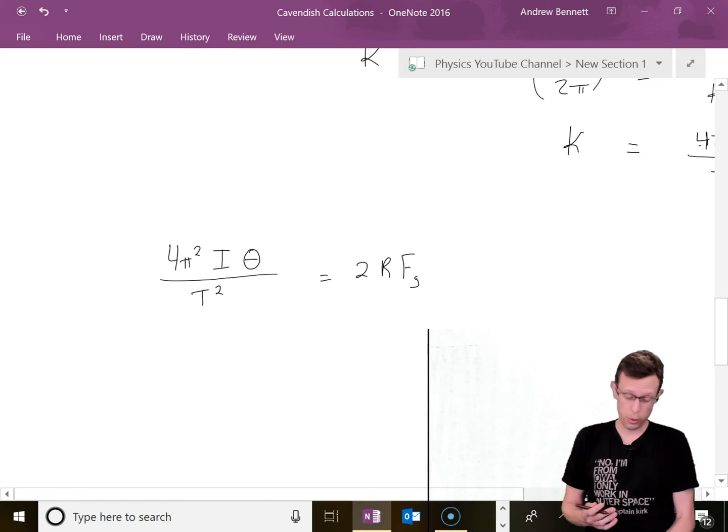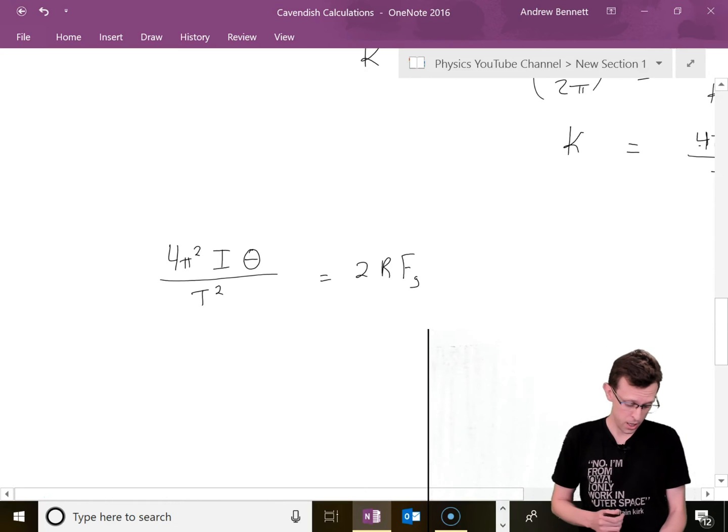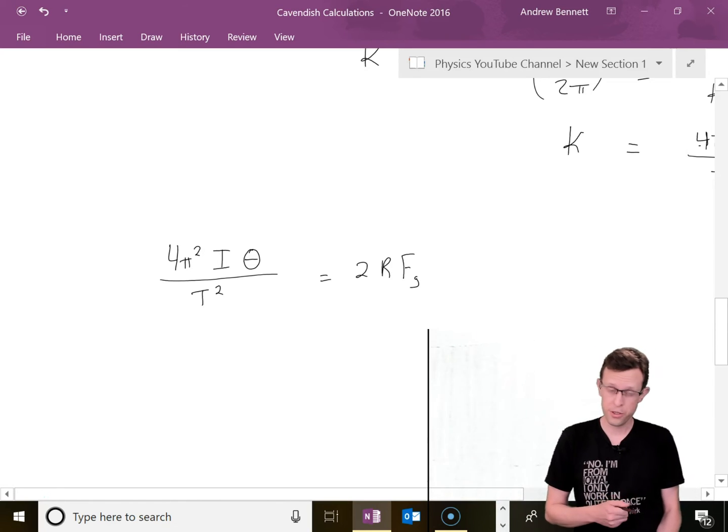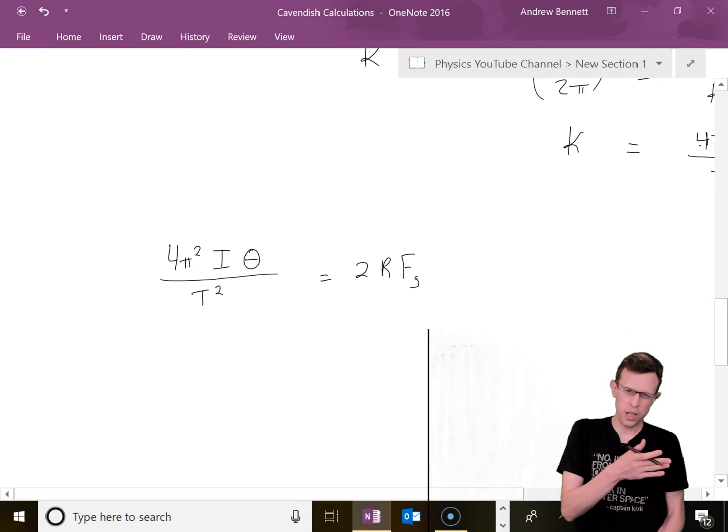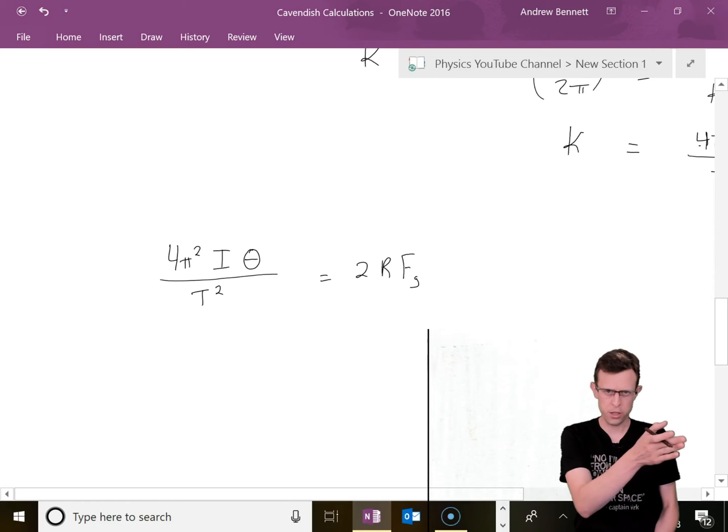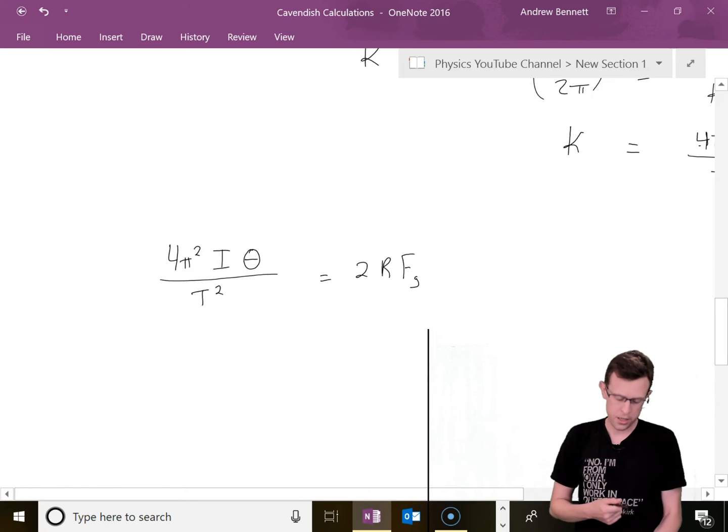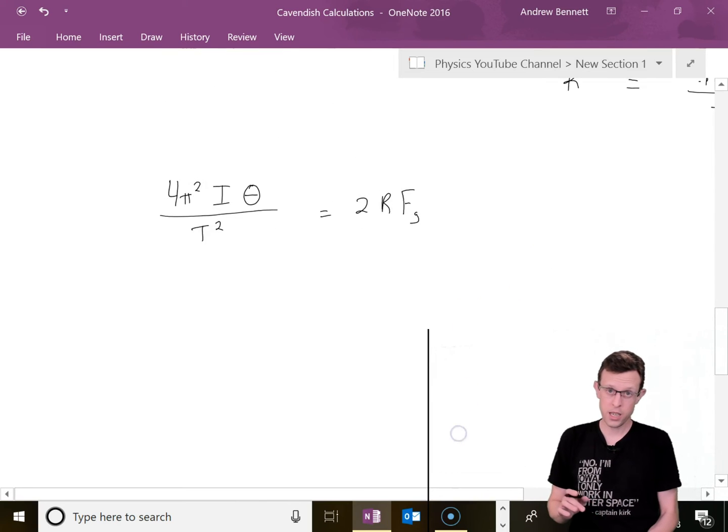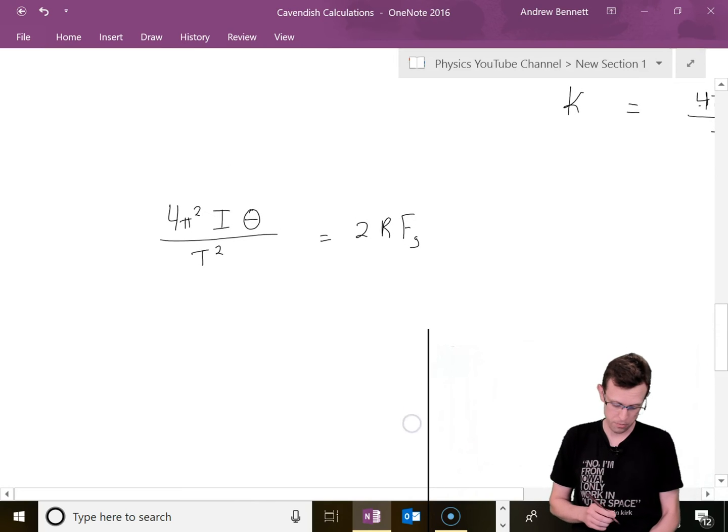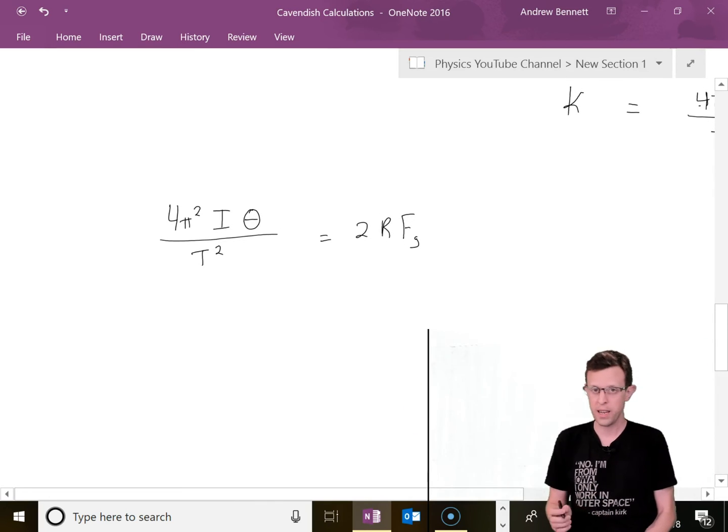So now we have 4 pi squared I theta over T squared equals 2 R Fg. That's a constant, we're good there. I, we still have to calculate. Theta we're measuring directly using that laser bouncing off a mirror and striking a point far away, so we can measure that angle pretty precisely. T squared, got the old stopwatch on that. We have R we can measure directly. Fg, we are not going to measure directly - that contains the term we're trying to calculate.